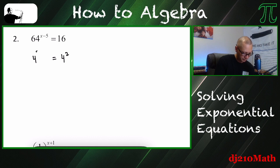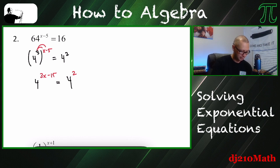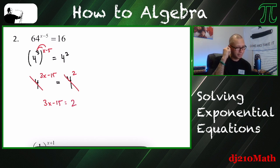So 4 cubed, 16 times 4. And that is still raised to the x minus 5 exponent. So again, I'm multiplying the exponent. So in a sense, I'm distributing this. So it's going to be 4, 3x minus 15 is equal to 4 squared.